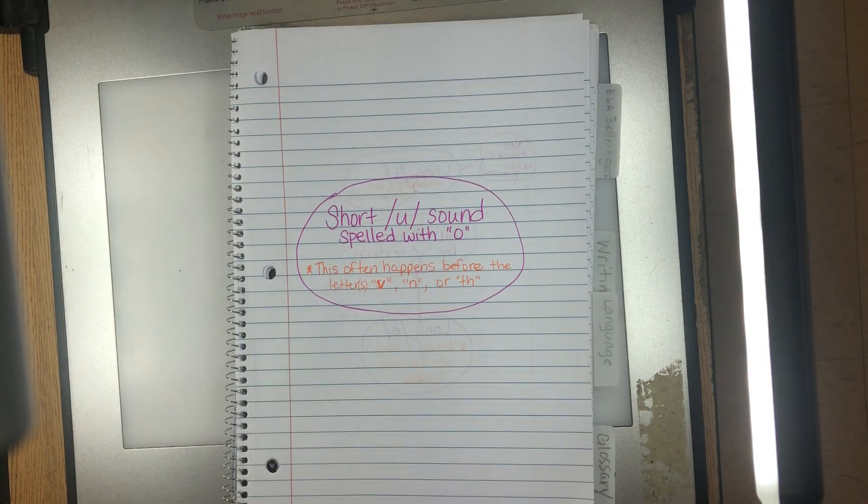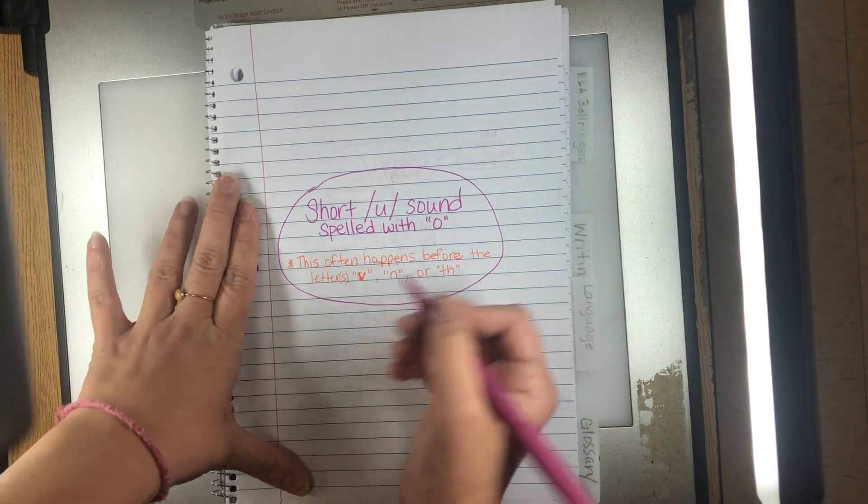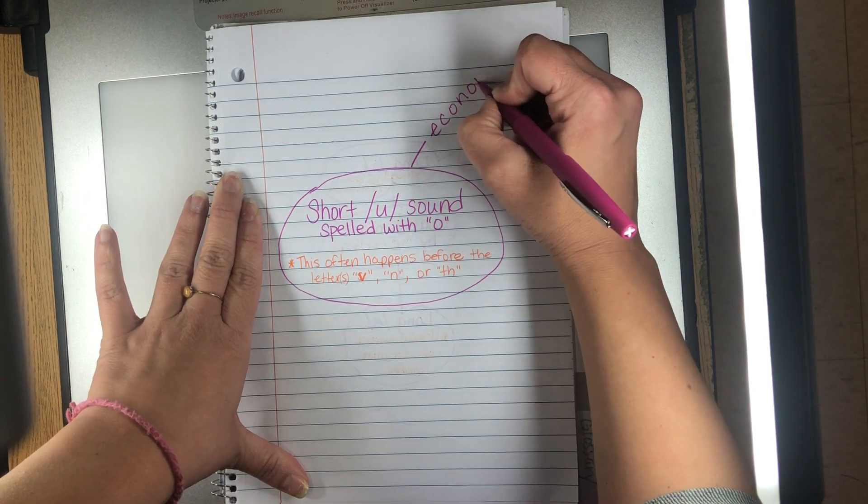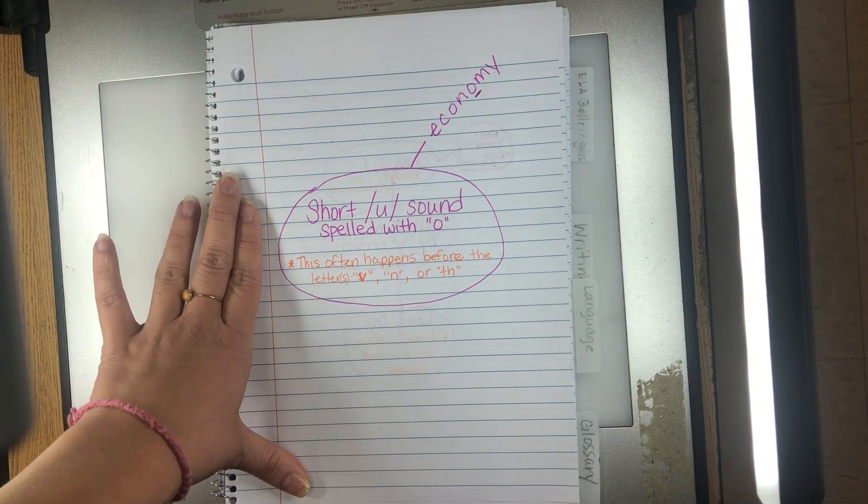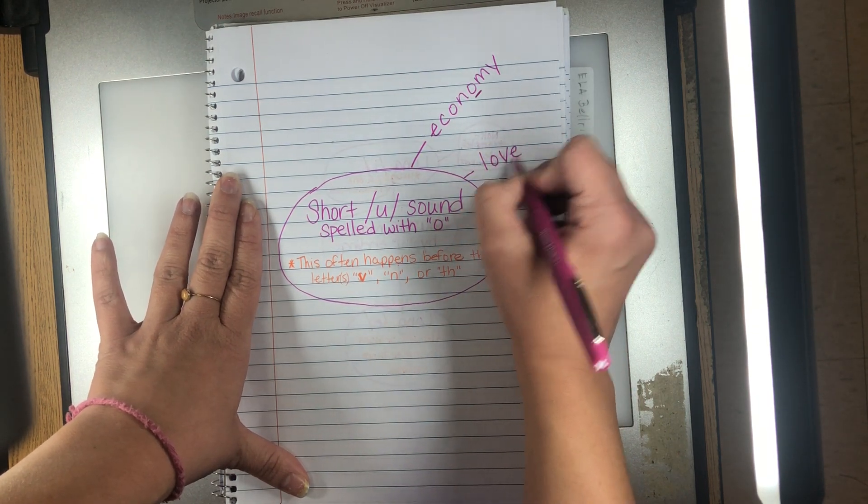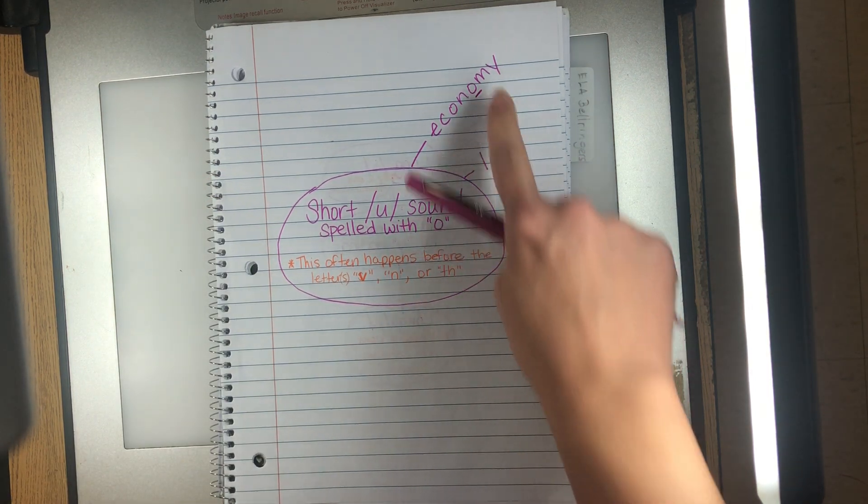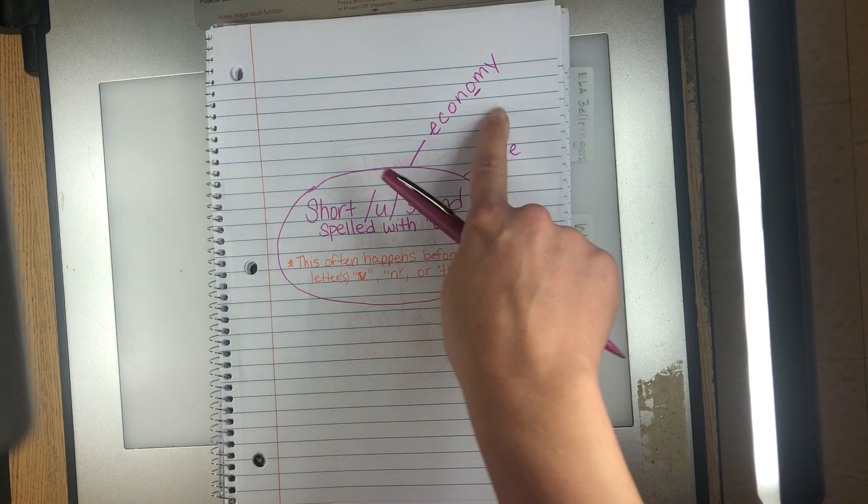So I want to start to branch off on this web with some of our words where we hear a short U sound. So the first one we can put on there is obviously economy. So economy, and I'm gonna underline that where we hear it. Okay, you can also hear that in the word love. We hear it and it comes before the V. This is actually kind of a rule breaker. We didn't mention M, but it happens.